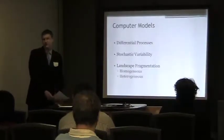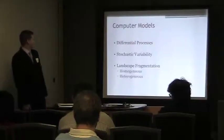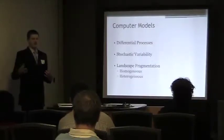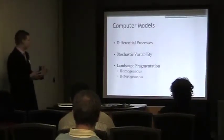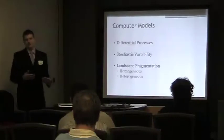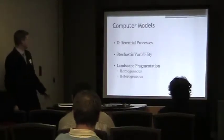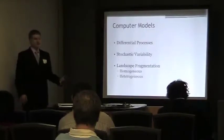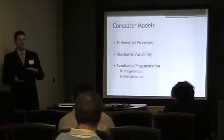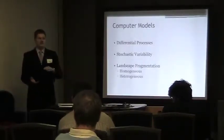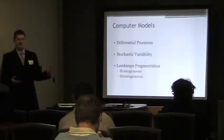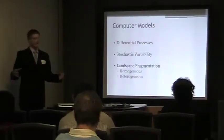Next, I'd like to look at some of the computer models that have already been created. These all feature differential processes — looking at how the rate of growth of the species changes over time. A big component is stochastic variability, examining different probabilities associated with movement across various situations. Another key piece is landscape fragmentation, which can be heterogeneous or homogeneous — either assuming uniform distribution of ash trees, or accounting for pockets of ash trees where spread is not uniform.